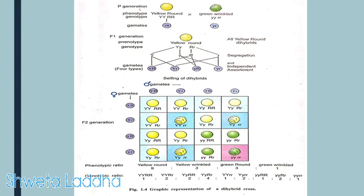Let us see a dihybrid cross in detail. He selected two homozygous pure plants: one having yellow and round seeds with genotype YYRR, and the other having green and wrinkled seeds with genotype yyrr. Gametes obtained were YR and yr respectively. After hybridization, F1 generation dihybrids YyRr were obtained, all showing yellow and round phenotype. What happened next is very important. When these dihybrids formed gametes, segregation occurred — the genes separated from each other — and then they independently assorted, producing four types of gametes: YR (parental), yr (parental), Yr (new), and yR (new).